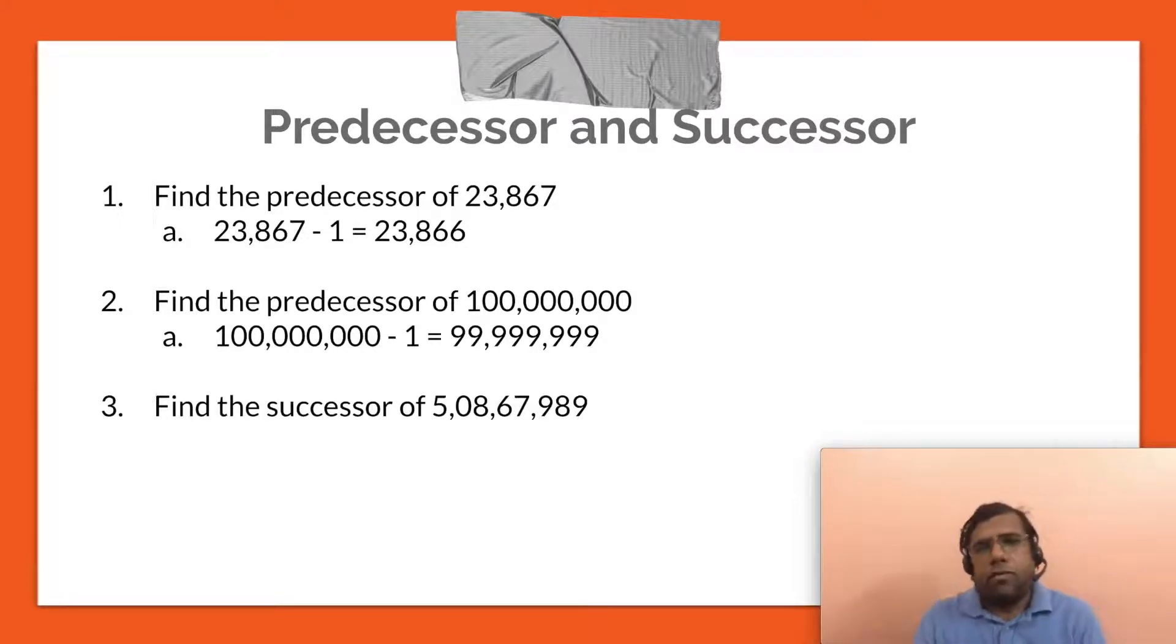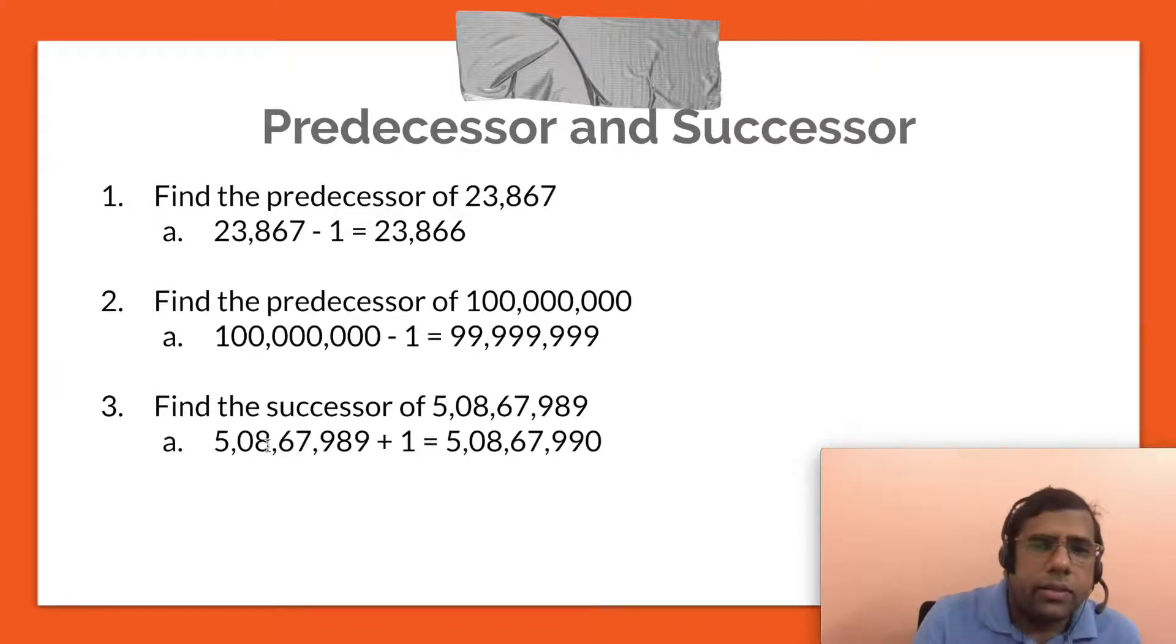Now a successor of 5 crore 8 lakh 67,989. Here, if you add one to the number, this 89 will become 90. And the successor will be 5 crore 8 lakh 67,990.